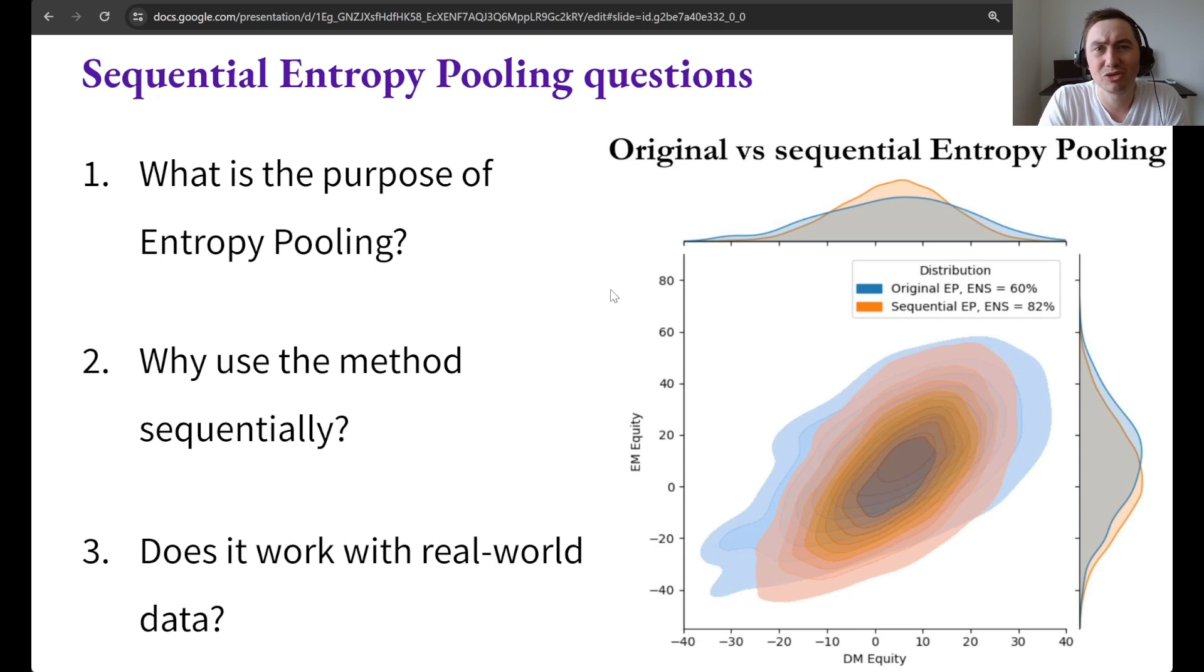Some people also like to say that it's a generalization of the Black-Litterman model without all the oversimplifying assumptions with CAPM, the normal distribution and the duct tape engineering associated with the tau parameter.